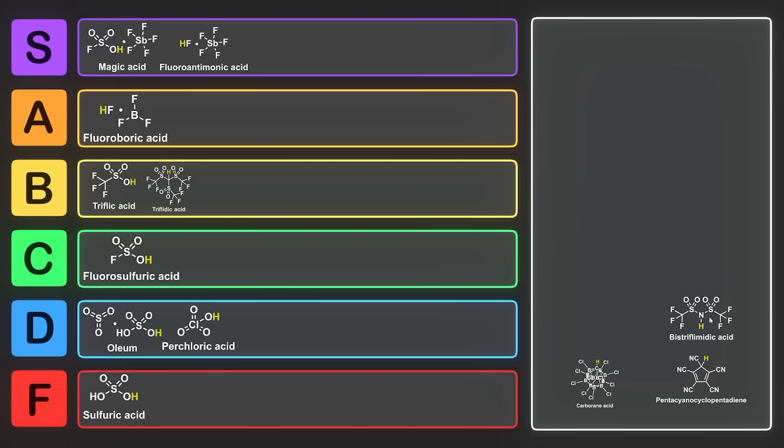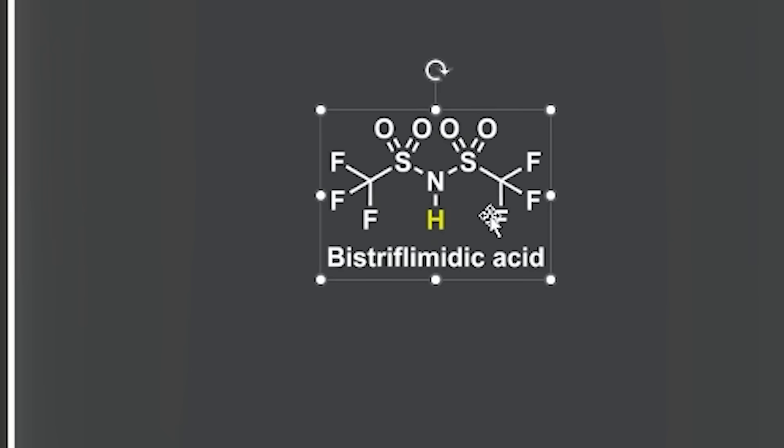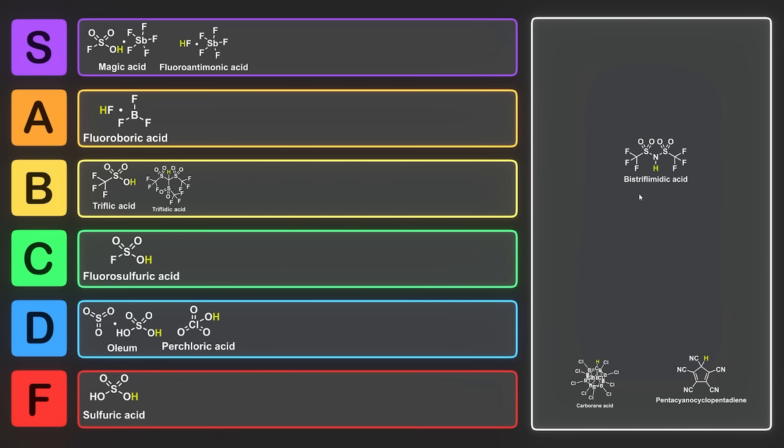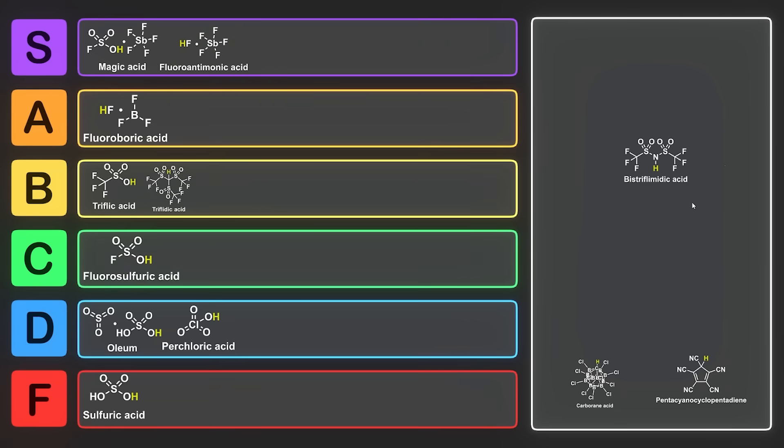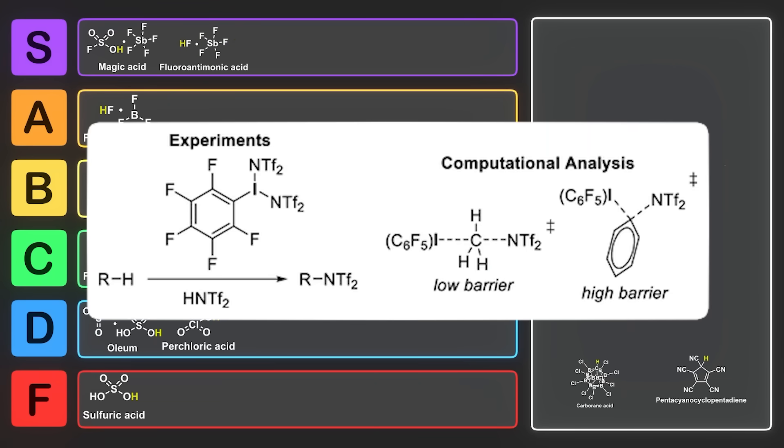Next we have bistriflimidic acid. This one's a little bit more common. This is a nitrogen-containing acid. Same sort of deal as the last one. These two sulfonyl groups just suck the electron density away from the nitrogen. The nitrogen's just dying to be an anion. This one's often used in the preparation of various inorganic salt complexes, as it's a fairly non-reactive counterion. Inorganic chemists want to study stuff, and if their complexes are decomposing, they can't study it. And if they can't study it, it's hard to get grants. So for that reason, they're going to be using anions that aren't very reactive, such as the bistriflimide anion.